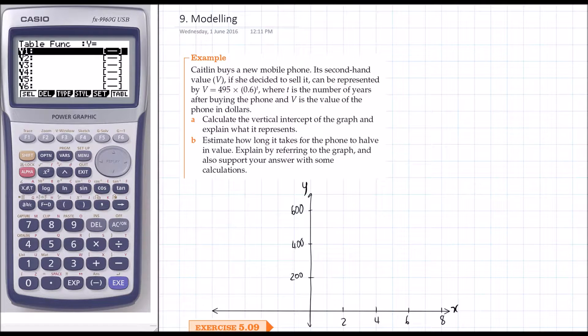This is talking about a woman, Caitlin, that's bought a new mobile phone. That second hand value, if she decides to sell it, can be represented by this function here. T is the number of years after buying it, and V is the value in dollars.